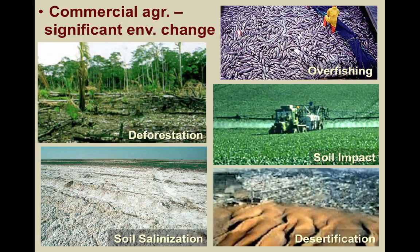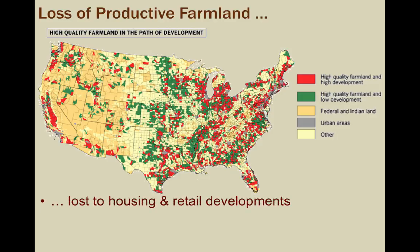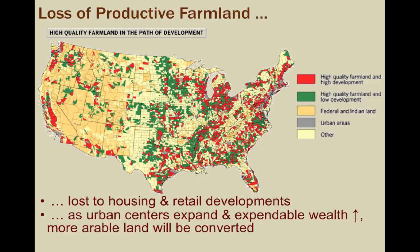As you can see in this map, a great deal of productive farmland is lost to housing and retail developments. As cities continue to expand and people's expendable wealth increases, more arable land will be converted from farmland to shops, suburbs, and other popular uses. Certainly, the negative impacts of agriculture go beyond these examples. In no way should we suggest we stop agriculture altogether — it's just an acknowledgment that with any benefit, there is virtually always a cost.